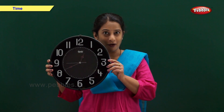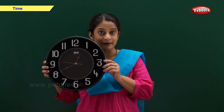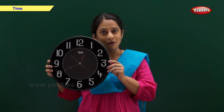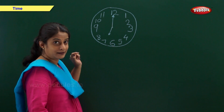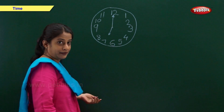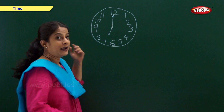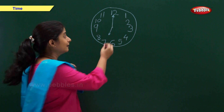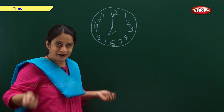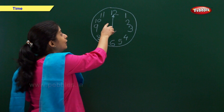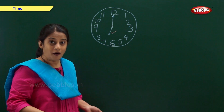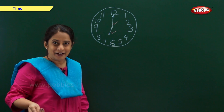This is a clock. The face of the clock is called a dial. The dial has numbers from 1 to 12. The clock has two or three hands — a short hand and a long hand. The short hand is called the hour hand. The long hand is called the minute hand.